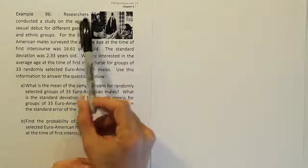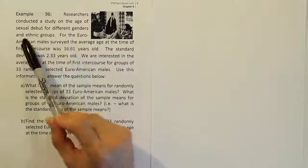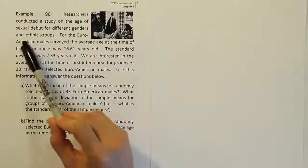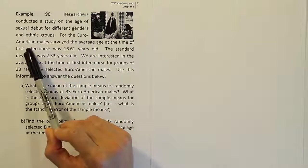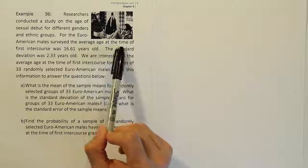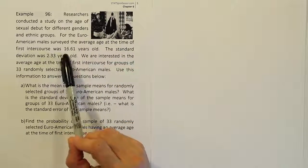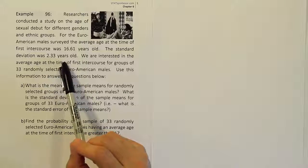Example 96. Researchers conducted a study on the age of sexual debut for different genders and ethnic groups. For the Euro-American males surveyed, the average age at the time of first intercourse was 16.61 years old. The standard deviation was 2.33 years old.